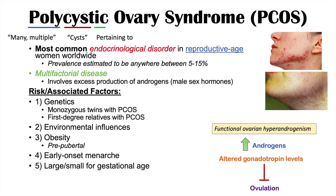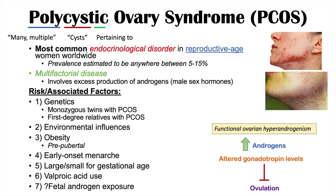The sixth risk factor is valproic acid use — an anti-seizure medication — which puts you at high risk for PCOS. The seventh is a hypothesis that PCOS could be related to fetal androgen exposure during pregnancy. So if your mother was exposed to higher than average levels of androgens, you could be at higher risk for having PCOS yourself.